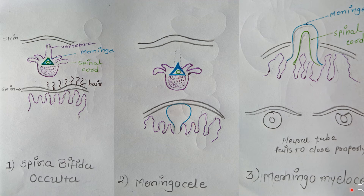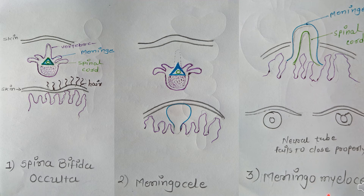The third type is myelomeningocele, which is the most severe. As you can see in the last figure, the spinal cord and meninges protrude out through an opening in the bony vertebrae, and the skin may or may not be intact over the back. The spinal cord is exposed and can be damaged, and there is also a risk of infection. Signs and symptoms include loss of sensation, paralysis, bladder and bowel movement problems, seizures, and leg and foot deformities.